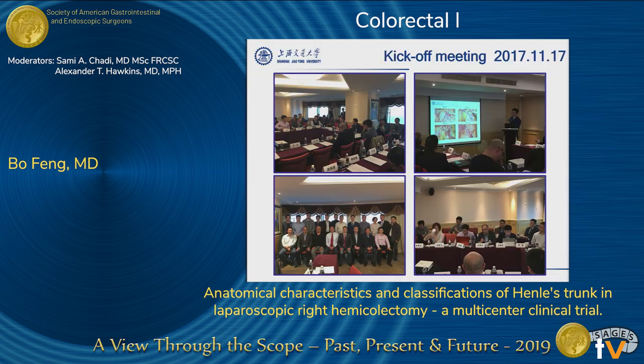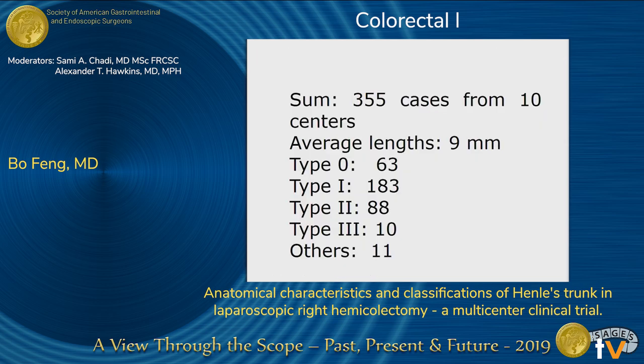We started this observational prospective cohort study in 2017, aiming to finish by the end of this year with approximately 800 patients enrolled. Currently we have 355 cases from 10 different centers across China. The average length of Henle's trunk observed is 9 millimeters. Among these 355 cases, there were 63 type 0 cases, 183 type 1 cases, 88 type 2 cases, and 10 type 3 cases.